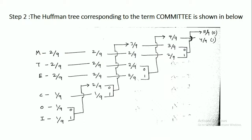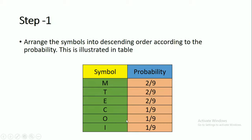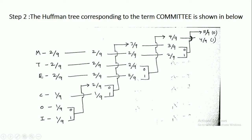Now we have to construct the Huffman tree. According to this table, we arrange the symbols M, T, E, C, O, I with their probabilities: 2/9, 2/9, 2/9, 1/9, 1/9, and 1/9.